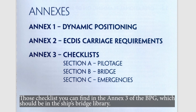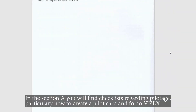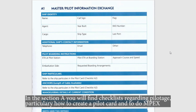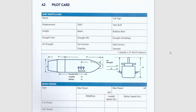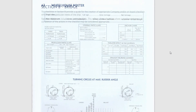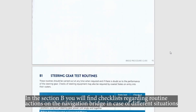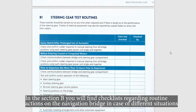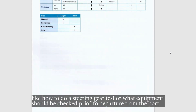In section A you will find checklists regarding pilotage, particularly how to create a pilot card and to do master-pilot information exchange. In section B you will find checklists regarding routine actions on the navigation bridge in different situations, like how to do a steering gear test or what equipment should be checked prior to departure from the port.